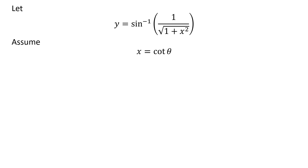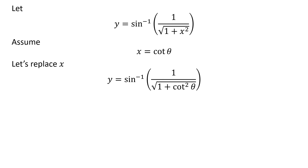Let us also assume x is equal to cotangent of theta. Replacing x by our assumed value in y gives us y is equal to inverse of sine of 1 upon square root of 1 plus square of cotangent of theta.